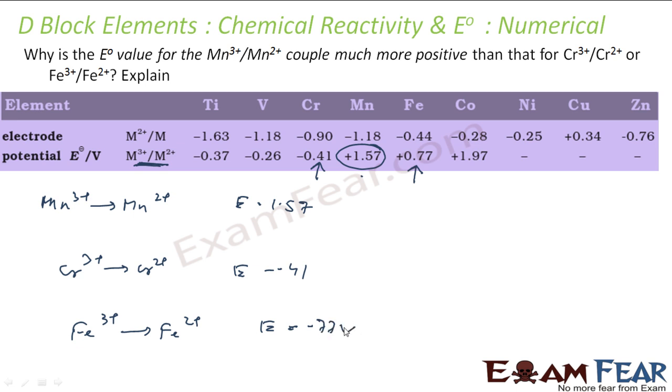The answer you can get from electronic configuration. Mn²⁺ configuration is 3d⁵ 4s⁰. Mn³⁺ will be 3d⁴ 4s⁰. Out of these which is more stable, 3d⁴ or 3d⁵? Obviously 3d⁵. Since the right hand side is more stable, the reaction will move to the right hand side, and thus you will get high value of E in this case.